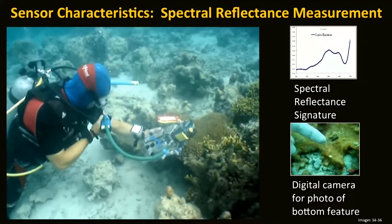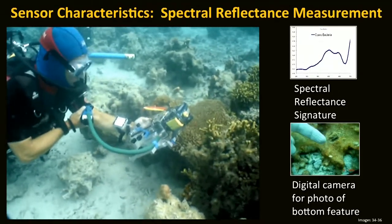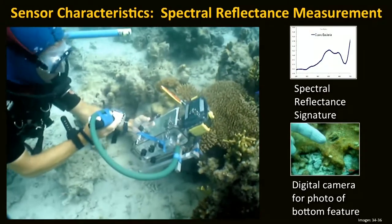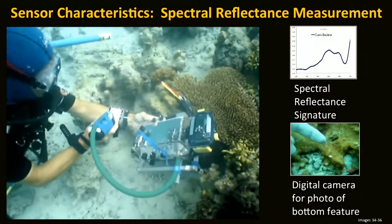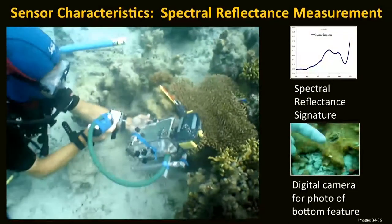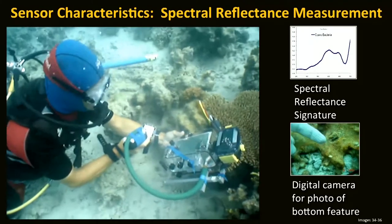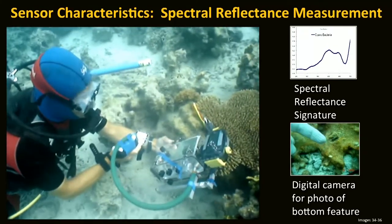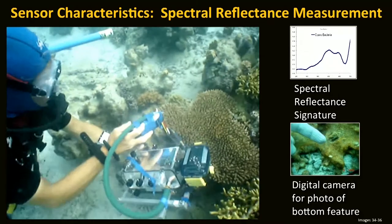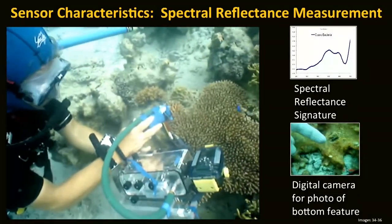Here's an example of how we collect spectral reflectance signatures in the field. Here's Chris taking a measurement over a calibration panel, and he'll then be taking a measurement of the amount of light coming off the coral which is right next to him. That coral reflectance signature is represented in the top right hand corner — and that's exactly the same type of information which the satellite imaging sensor is collecting in each pixel of the image.